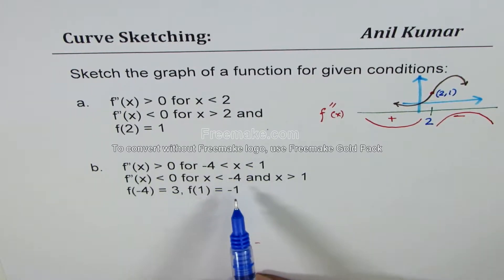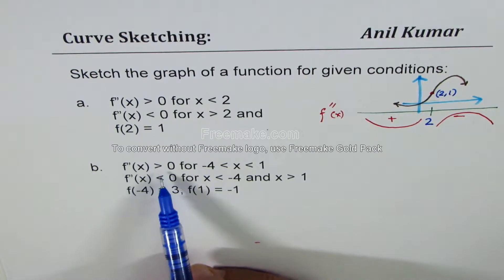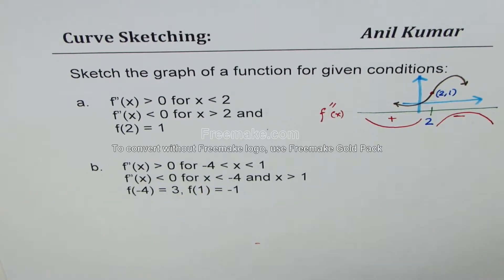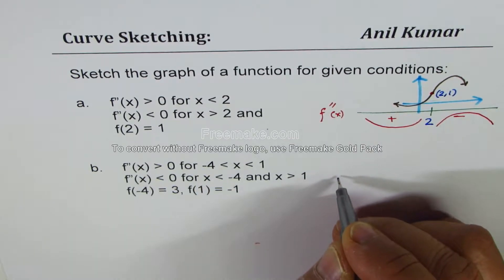Now we have another example here and let's figure it out. Now in this particular case, we have f''(x) > 0 when x is between -4 and 1. So we will follow a similar method.